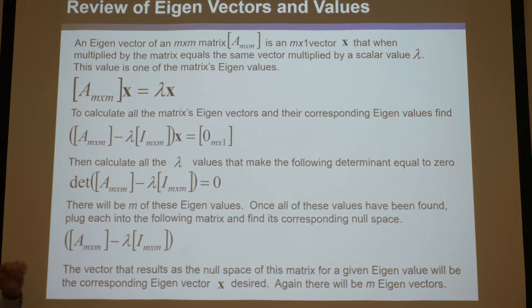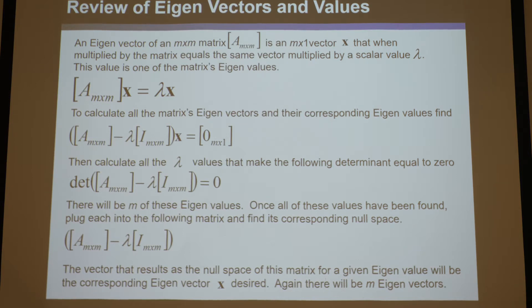So if you have an m by m matrix, you will find m eigenvalues and m corresponding eigenvectors that satisfy this equation. That's really all you need to know — the definition of eigenvectors and eigenvalues is captured in that single line.